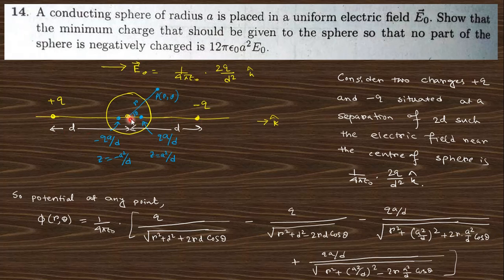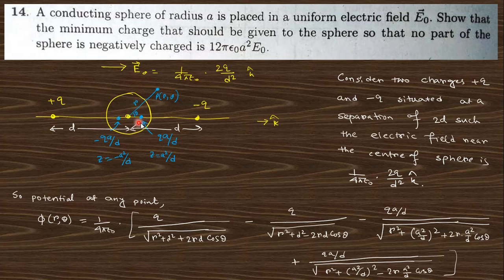The electric field at the center from the +q charge points in one direction and from the -q charge in the other, adding up to give the net uniform field. When the radius a is very small compared to the separation d, this pair of charges reproduces the uniform field. The induced image charges on the sphere are -qa/d and +qa/d at their respective positions, as derived in the previous lecture.